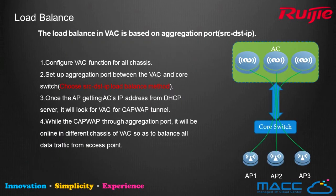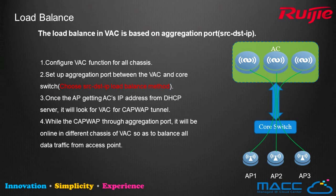The load-balancing feature in VAC is based on link aggregation ports between the uplink switch and the VAC instance. The operator should note that the aggregation port between the VAC and uplink switch is required once virtualization is configured, and the uplink switch — in this diagram, the core switch — needs to be set to source-destination IP-based load balancing mode. Once an AP comes online, CAPWAP control and data will be balanced to different virtual members.